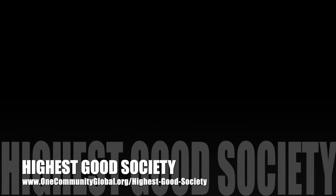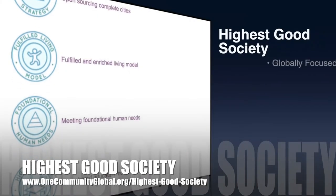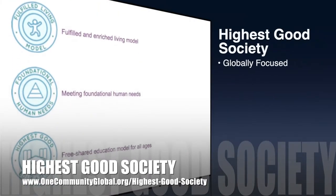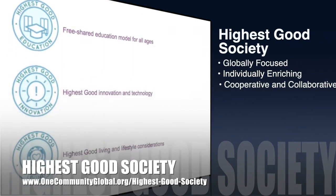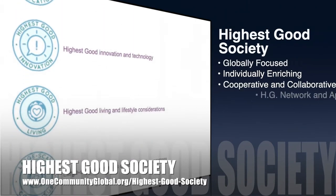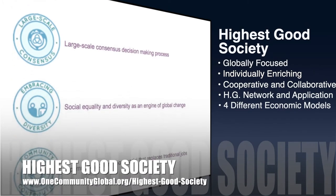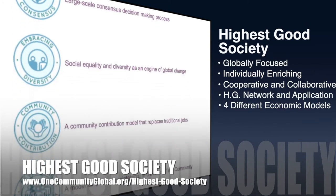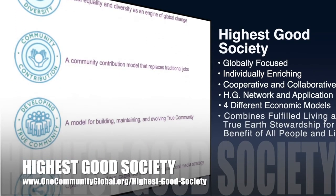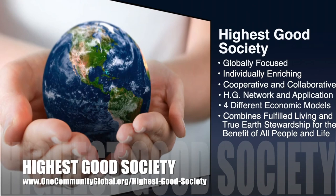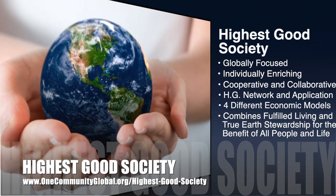The One Community approach to highest good society is globally focused, individually enriching, cooperative and collaborative, includes a highest good network and application, four different economic models, and combines fulfilled living and true earth stewardship for the benefit of all people and all life on this planet.